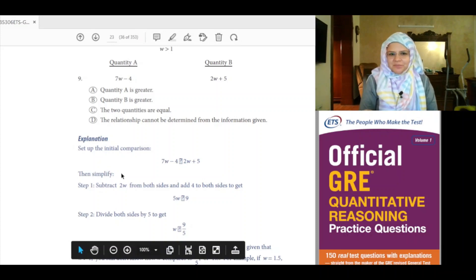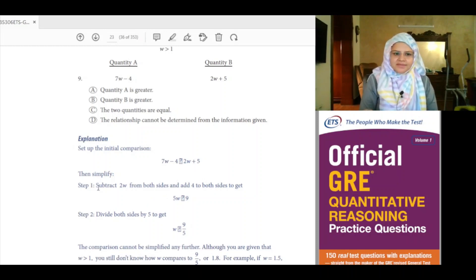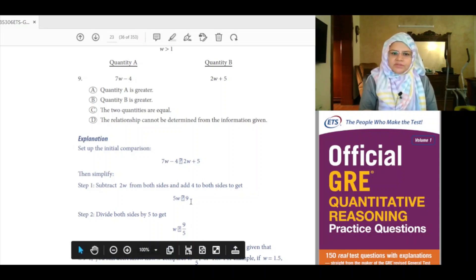Explanation: Set up the initial comparison, 7W minus 4 versus 2W plus 5. Then simplify. Step 1: Subtract 2W from both sides. We get 5W minus 4 versus 5. Add 4 on both sides, we get 5W versus 9.